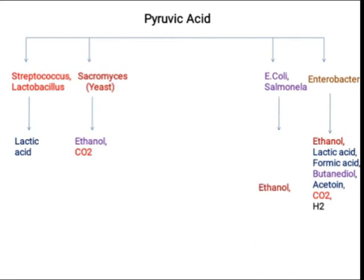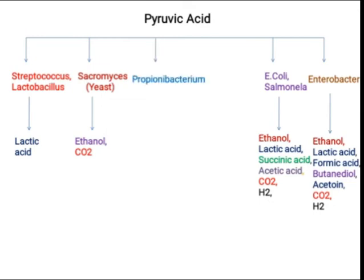Similarly, if we talk about Propionibacterium — as the name suggests — this is basically propionic acid fermentation. The end products of fermentation from Propionibacterium are acetic acid and CO2.